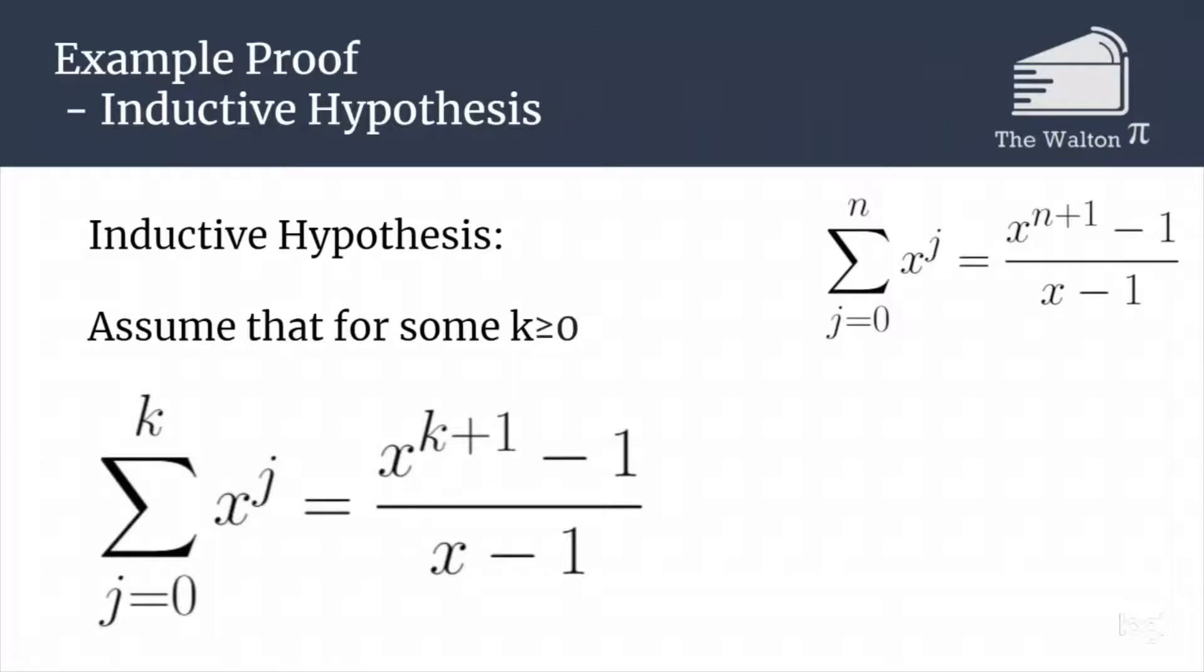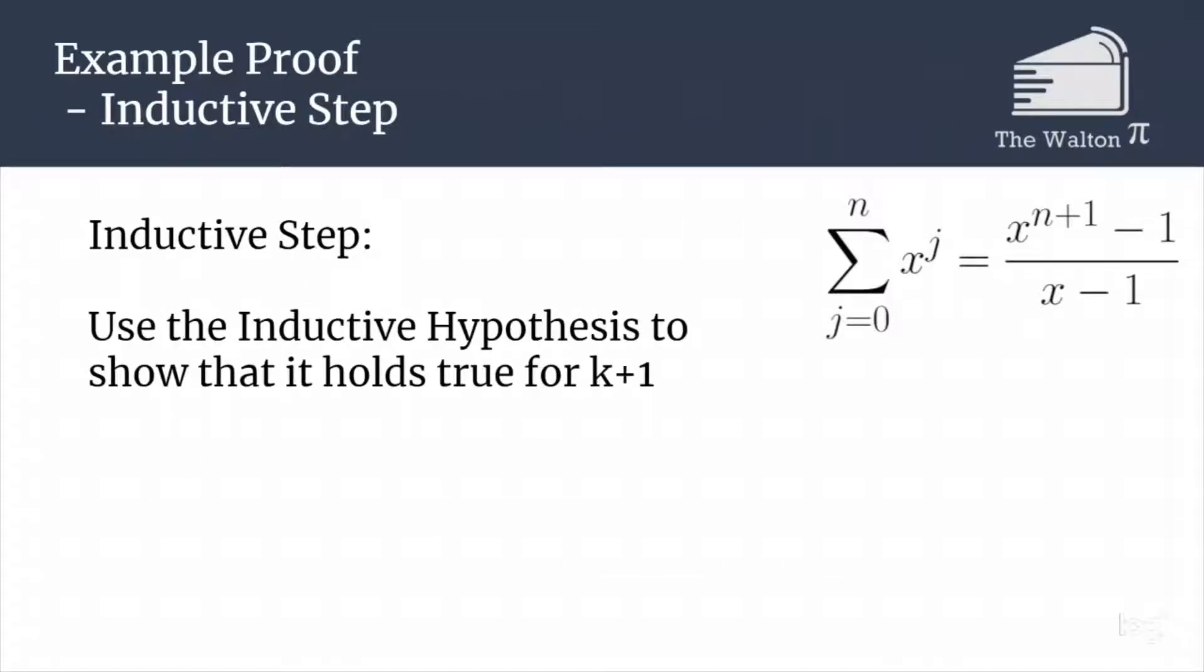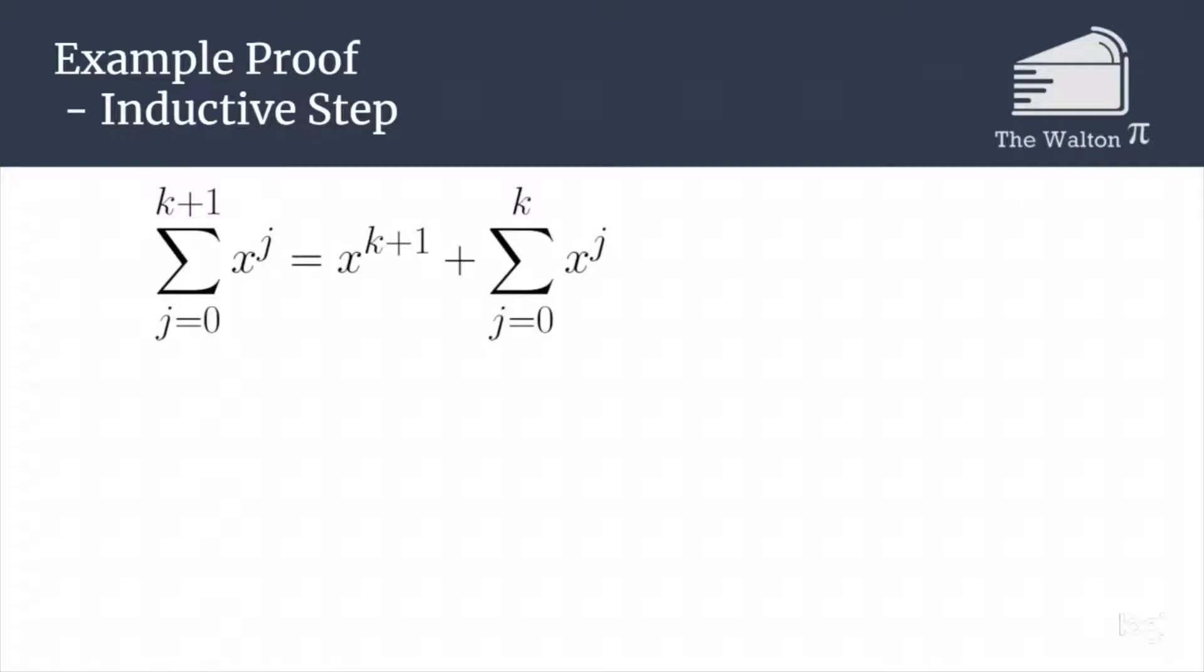We will now go through our inductive step. In the inductive step, we are going to use the inductive hypothesis to show that it is true for k plus 1. So if we start with the sum from j equals 0 to k plus 1 of x to the j, see if you can use this initial setup to come up with the inductive proof.